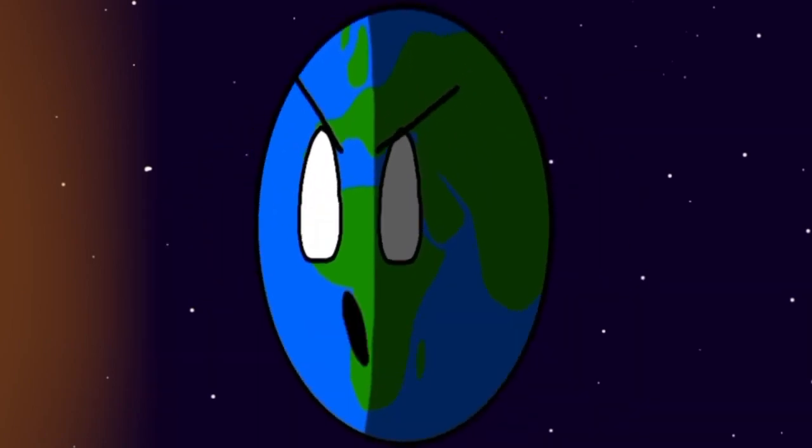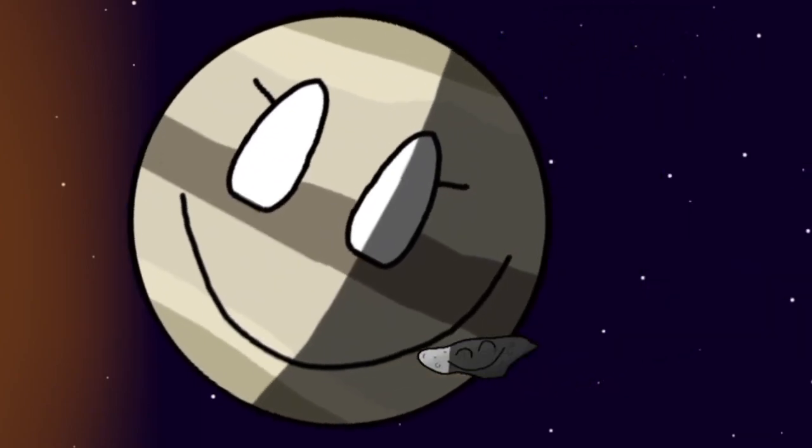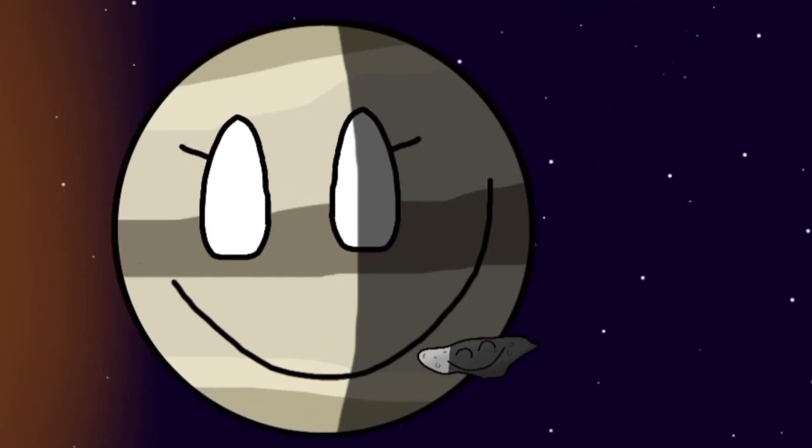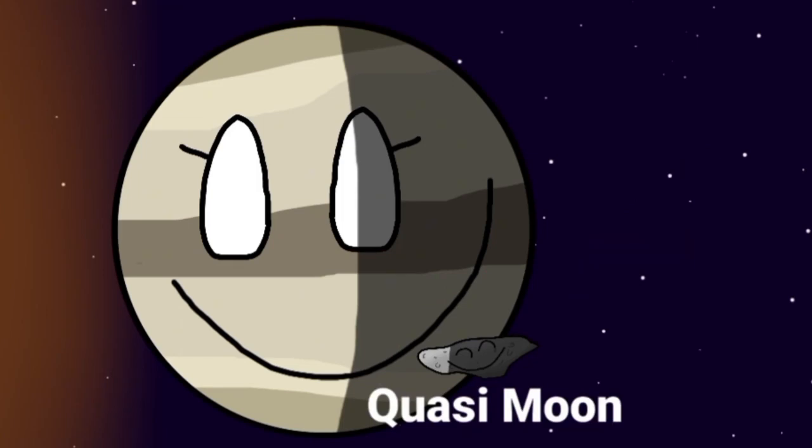Earth says, "Of course." Venus explains, "So, one day I was just minding my own business in my orbit until I noticed that there was a tiny little moon orbiting me. Well, it wasn't really orbiting me. It's actually a quasi-moon. But yeah. And I named her Zoozve."